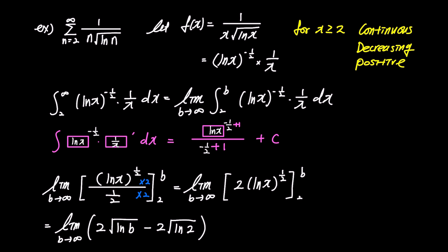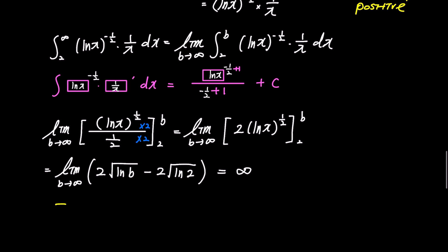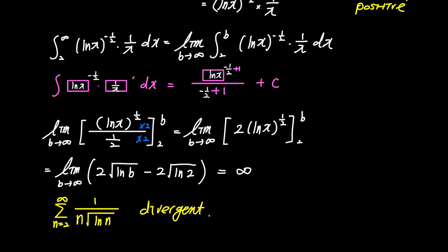Substituting b and 2, we end up with the limit of 2√(ln b) minus 2√(ln 2) as b approaches infinity. The result of this expression eventually diverges to infinity. Since the integral result diverges, the sum of 1 over n times square root of ln n, as n goes from 2 to infinity, also diverges.